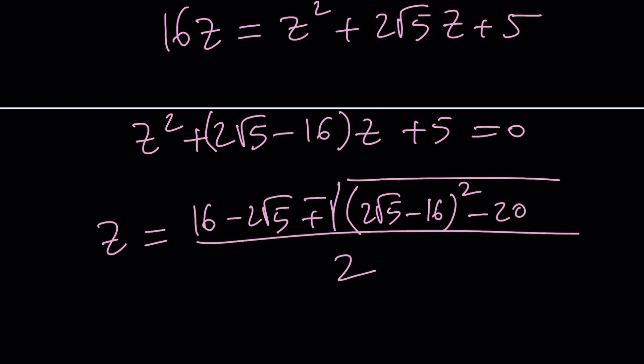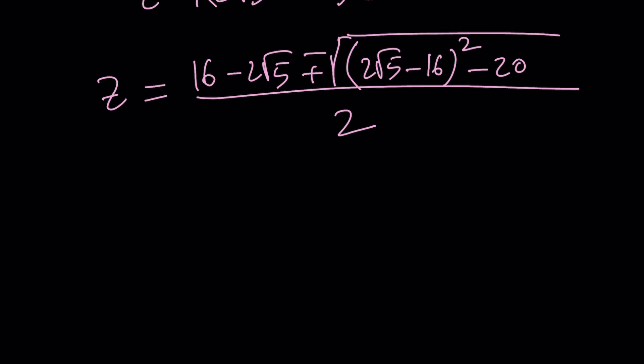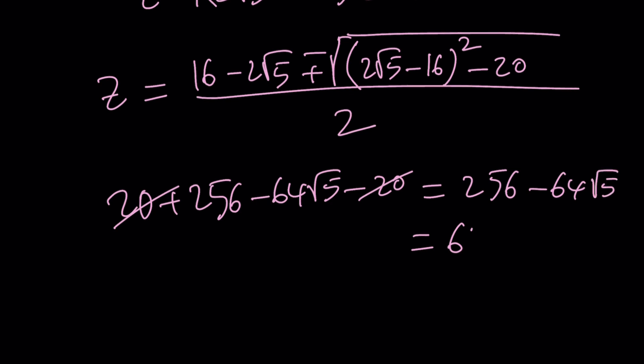Now let's expand the radical. We get 4 × 5, which is 20. Oh, looks like something's going to cancel out, right? 20 + 256 - 64√5 - 20. And the 20s are going to cancel out. We're going to end up with this. And this can actually be factored. We can take out 64 and that's going to give us 4 - √5.